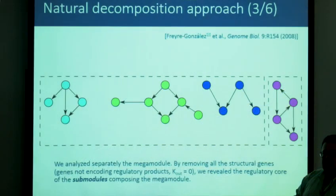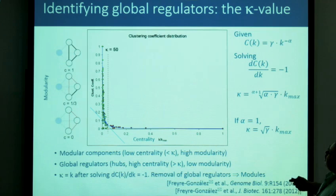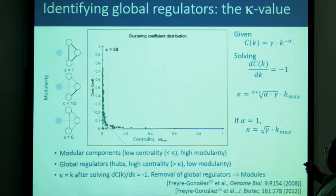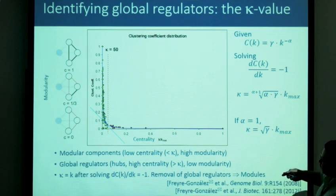Regarding how the kappa value is computed: we define the kappa value as the point where the change in the clustering coefficients equals the change in the centrality or connectivity. This is the chain function, and we are looking for the point where the slope equals one.